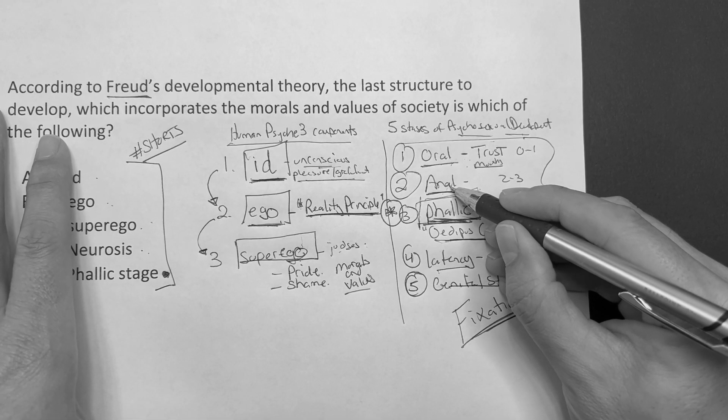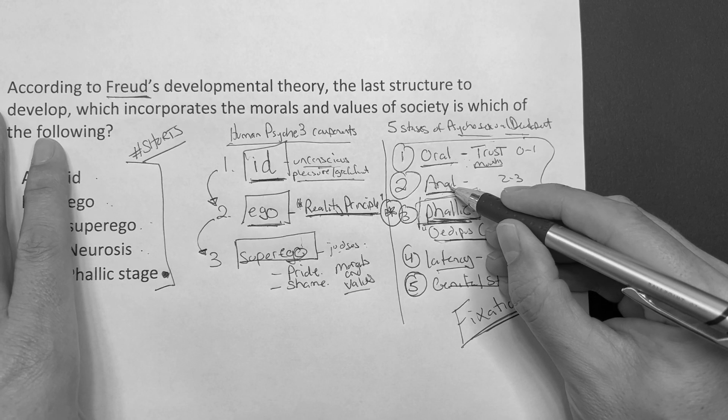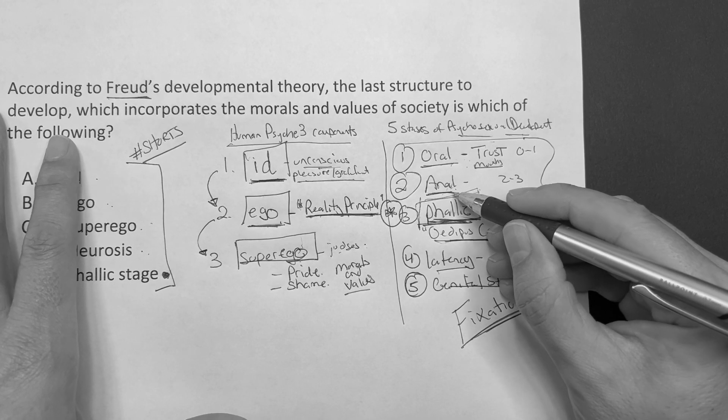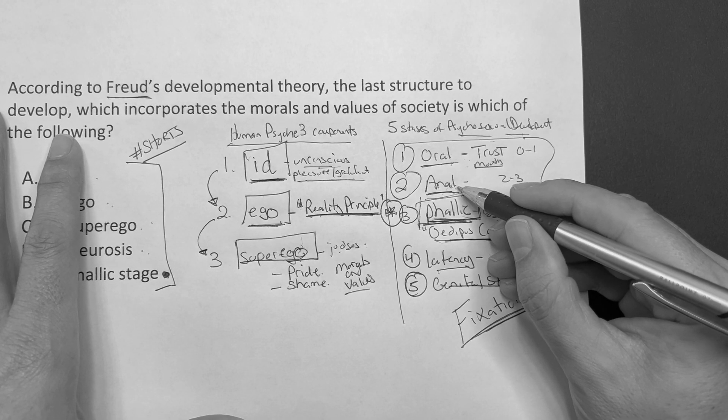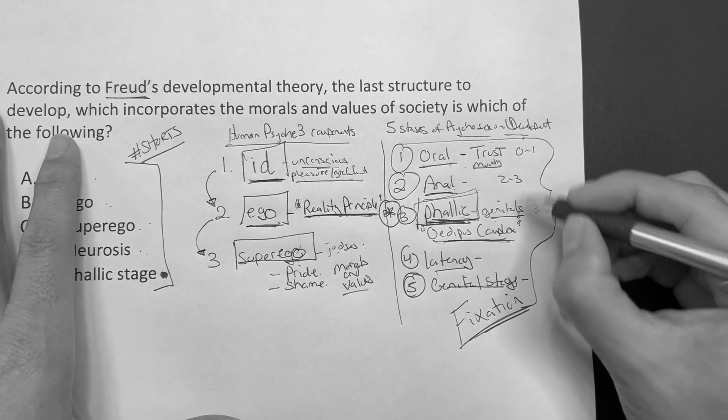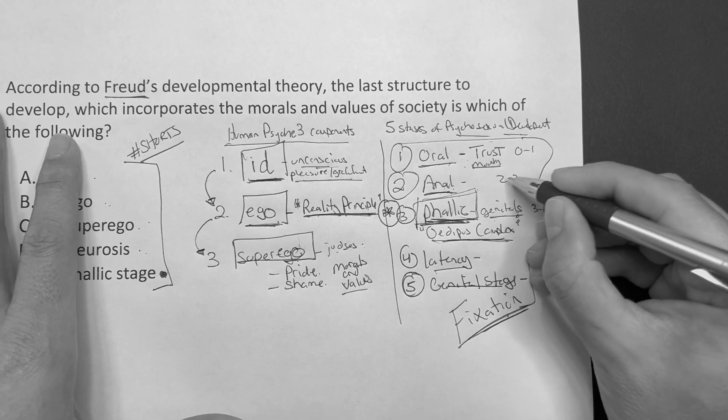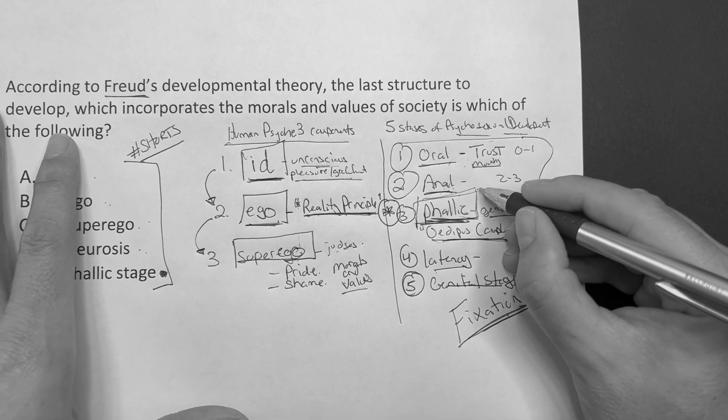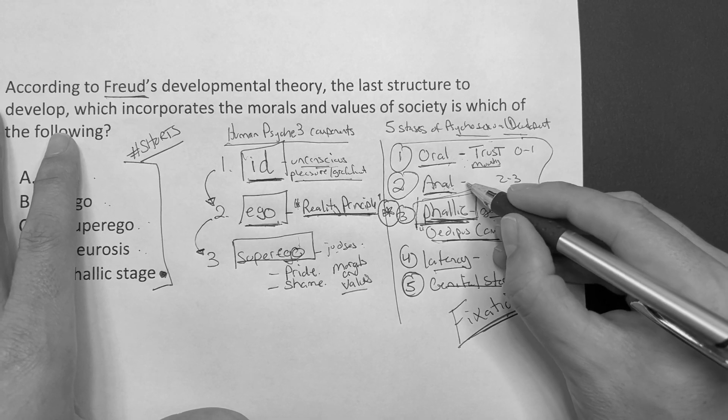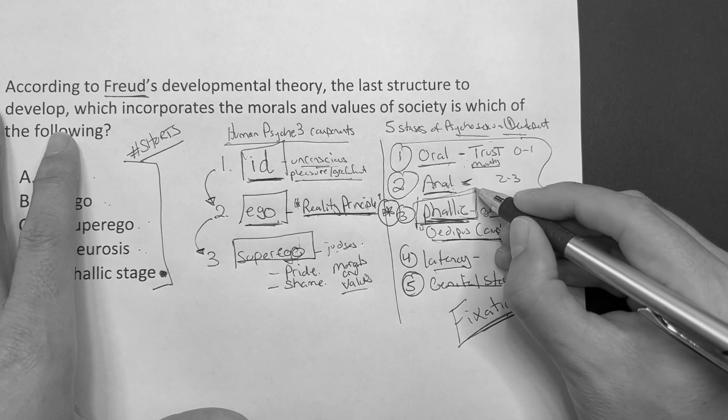Then the anal phase, if you're stuck in this one, if you don't get the satisfaction of our accomplishment of bowel and bladder control, you could get fixated and you'll carry into, this is where the obsessions with perfection or the opposite of perfection where you're just disorganized. So perfection or disorganization in the anal phase.